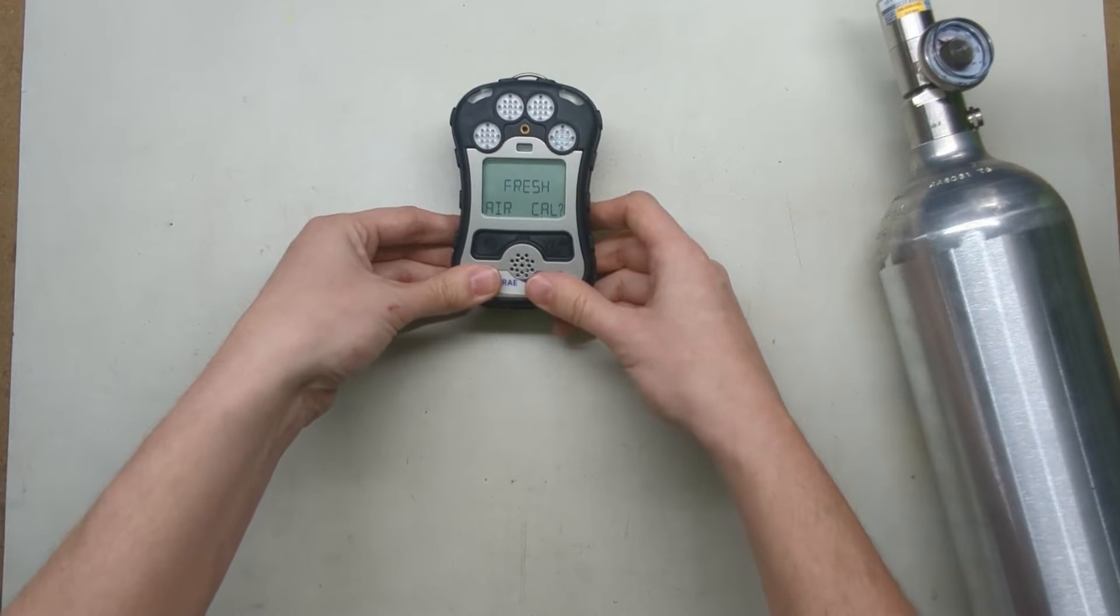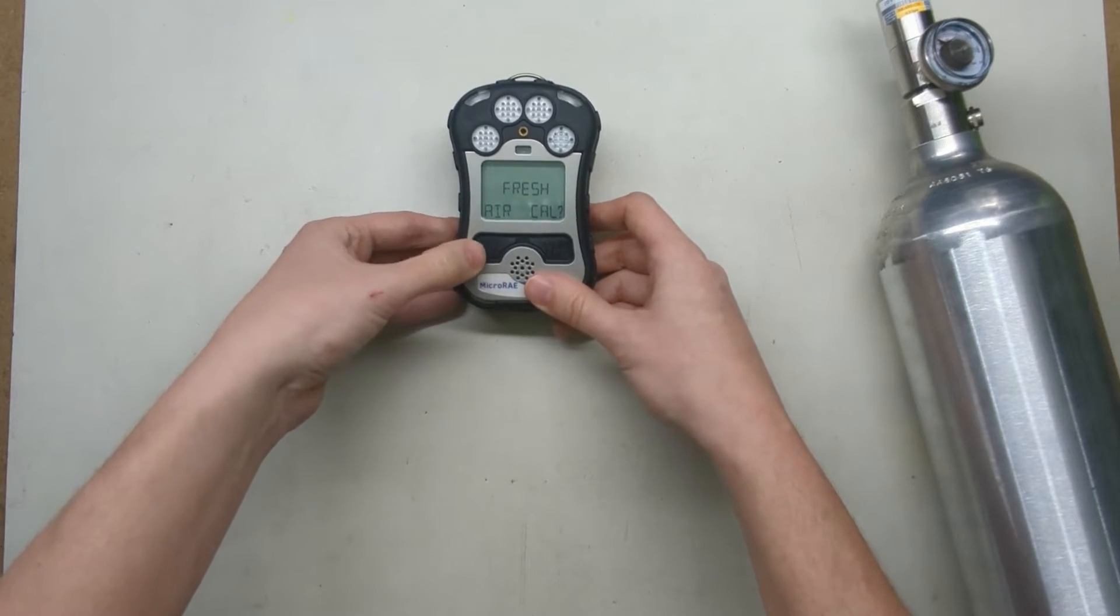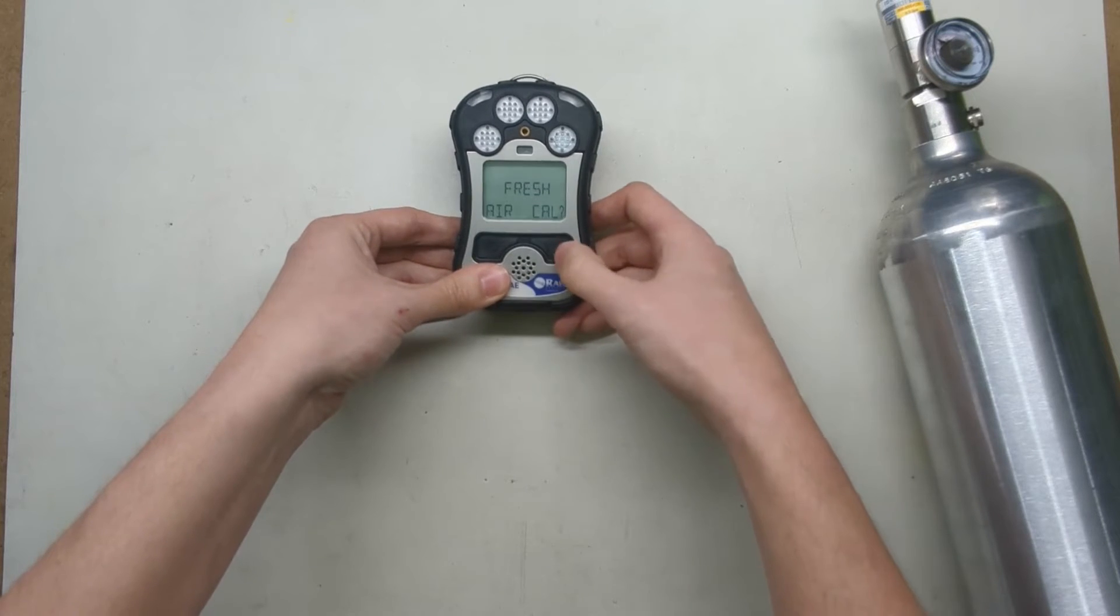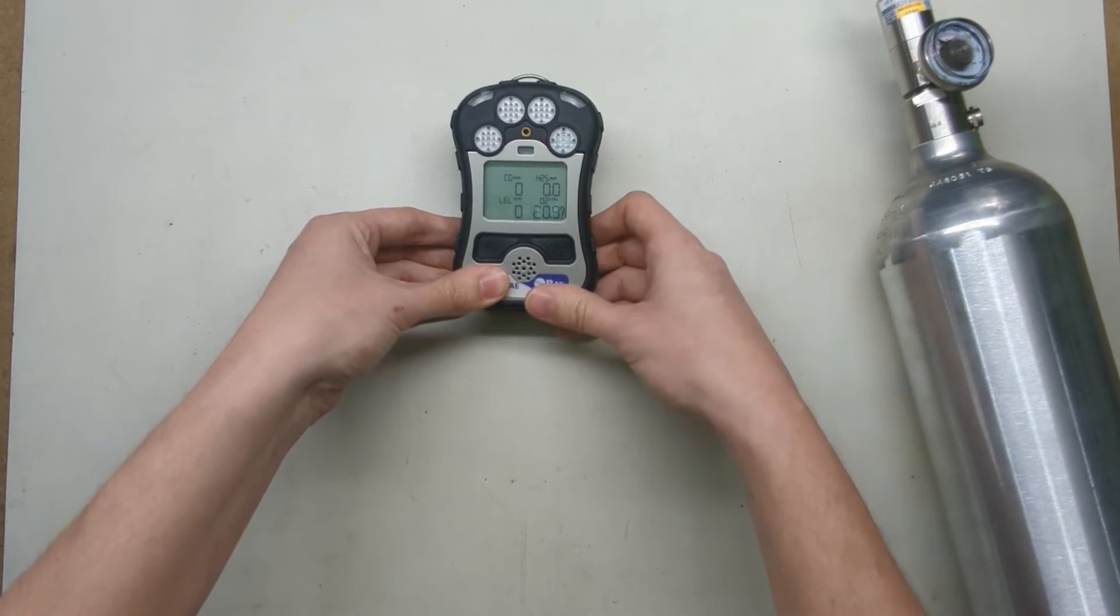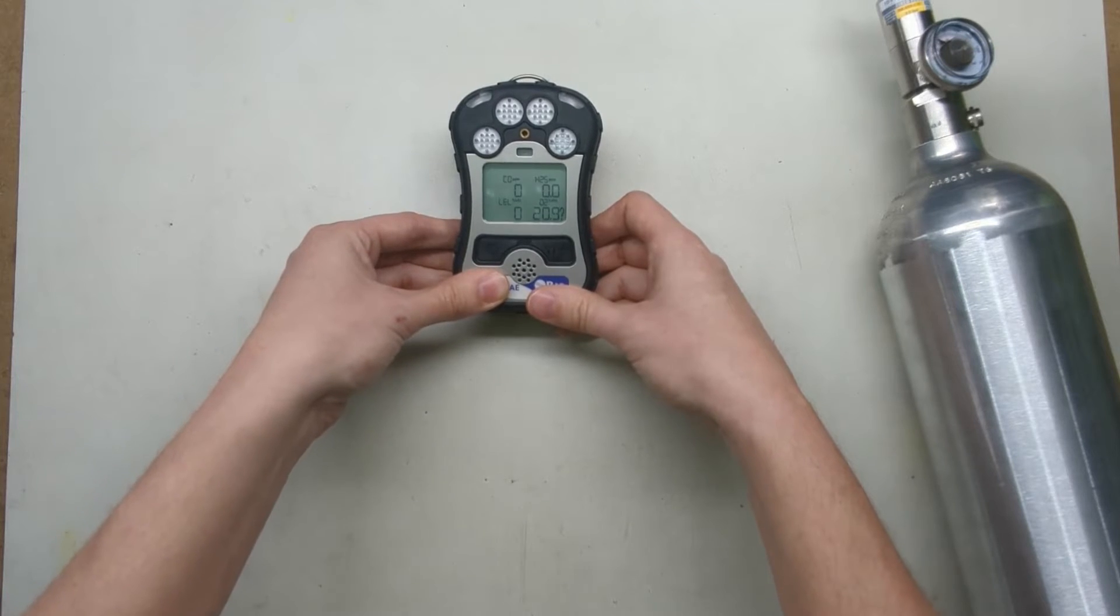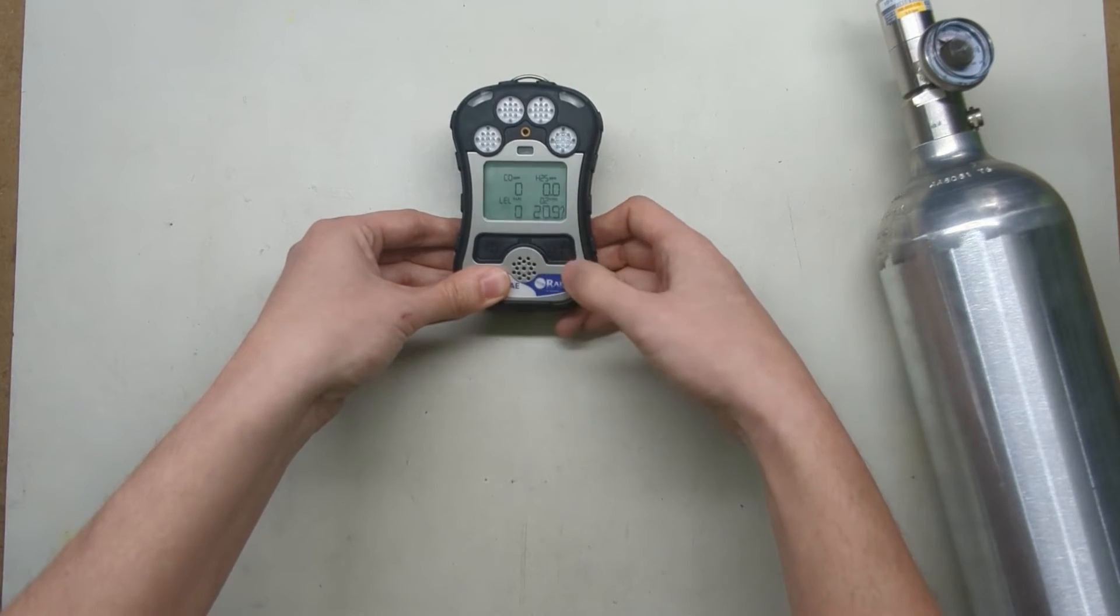We're going to press the power button. This says fresh air cal. If we keep going it would show us multi cal, and that's what we're using in a minute. For now, press this button and it's going to go to zero. Make sure you're in fresh air for this. You don't want a truck or anything along those lines going.